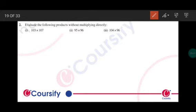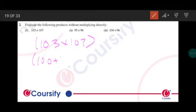Next question: evaluate the following products without multiplying directly. In this question, we need to apply properties to these products. So let's do the first part, that is 103 into 107. 103 can be written as 100 plus 3.